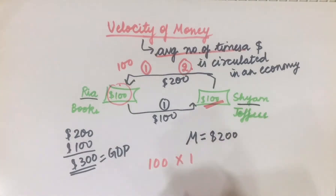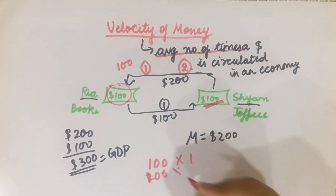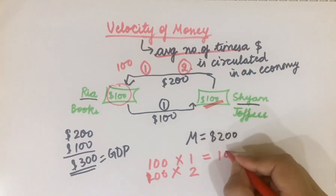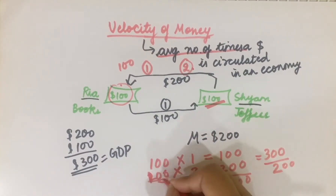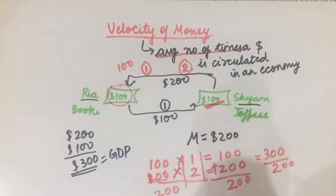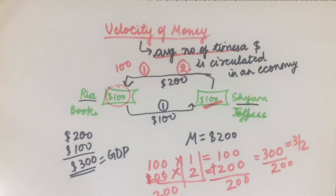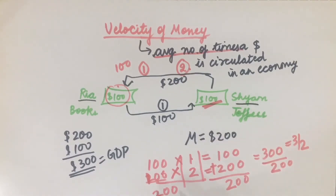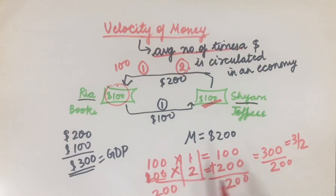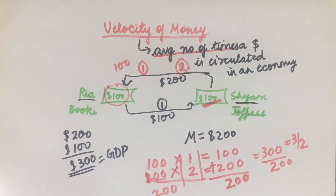To find the average, the first $100 circulated once, and the second $100 circulated twice. So the average is: (100 × 1) + (100 × 2) = 300, divided by the total money of the economy which is $200. So 300 divided by 200 gives us the velocity.